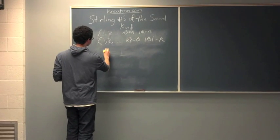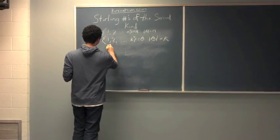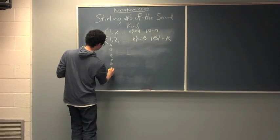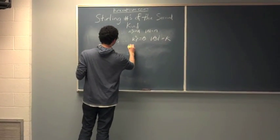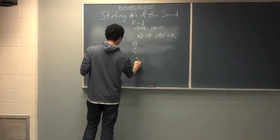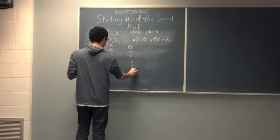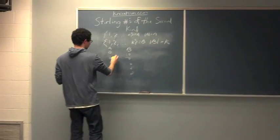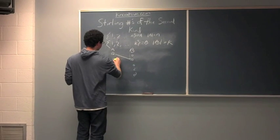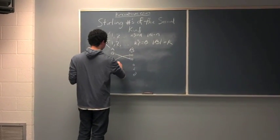So, the number of onto functions from A to B. So, we got, here's A right here. Got a bunch of elements in the domain. And here's B.